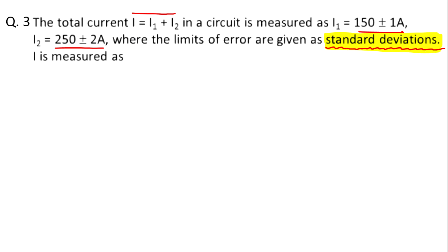You have two currents and the error given is in standard deviation. You have to find the total error in the total current. So for this question, a little hint: the errors ±1 and ±2 are standard deviations given to the terms, not the absolute errors. So here you cannot directly add the errors as you would in the case of sum or difference of quantities.